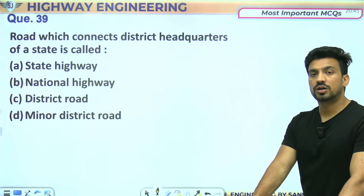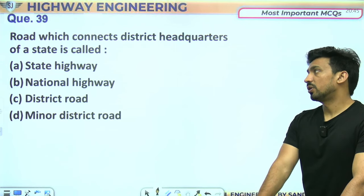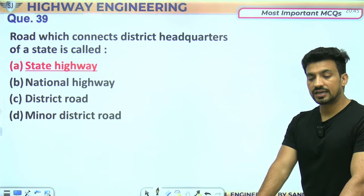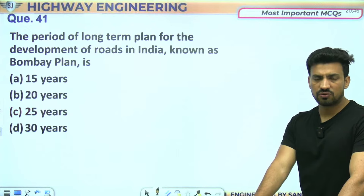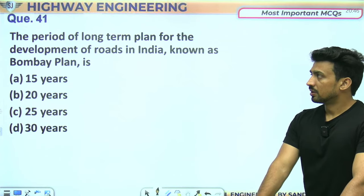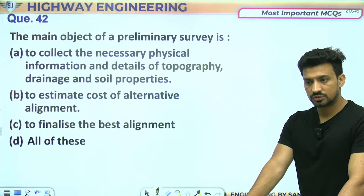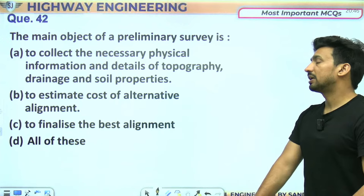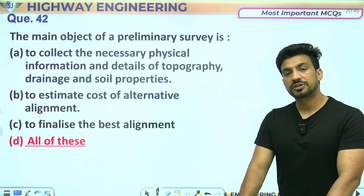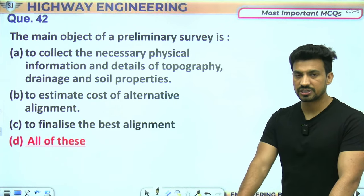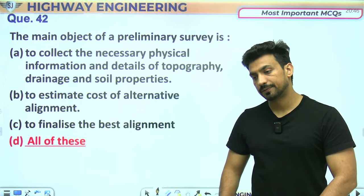Preliminary survey का main objective है: soil properties, drainage properties और area की main information collect करना, possible alignments देखना और उनमें से best alignment decide करना — all of these। Unmetalled road का symbol dash-dash (---) होता है। Geometric design में rural roads में national highway, expressway, state highway, major district road, other district road और village roads आती हैं; urban roads में expressway, arterial, sub-arterial, collector और local streets।